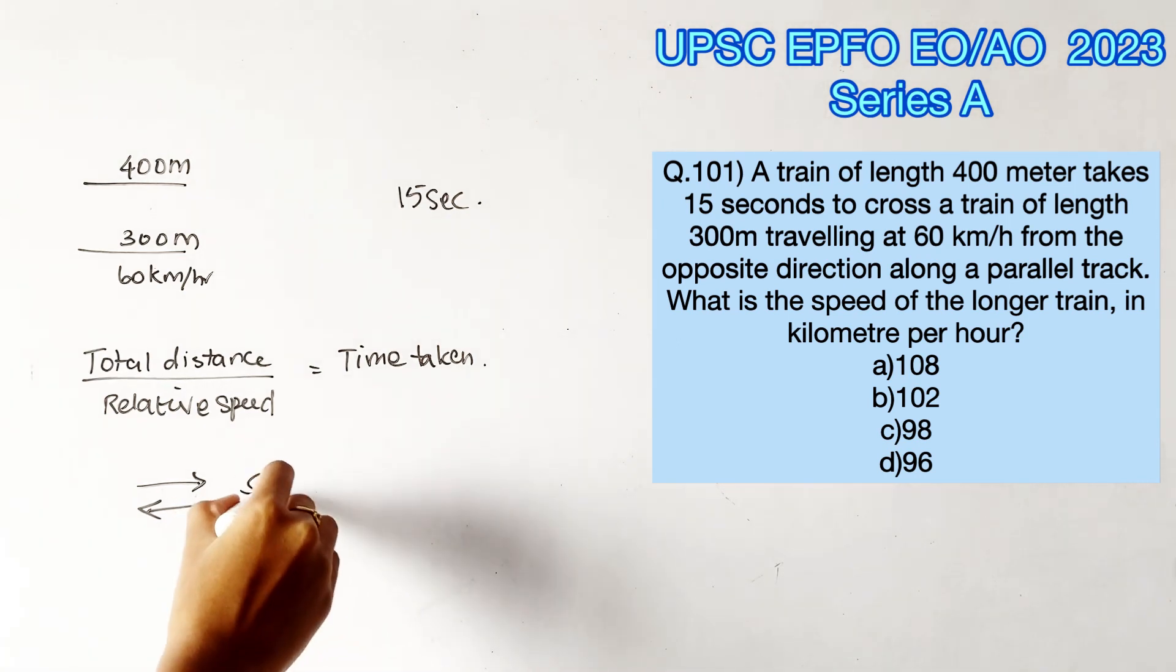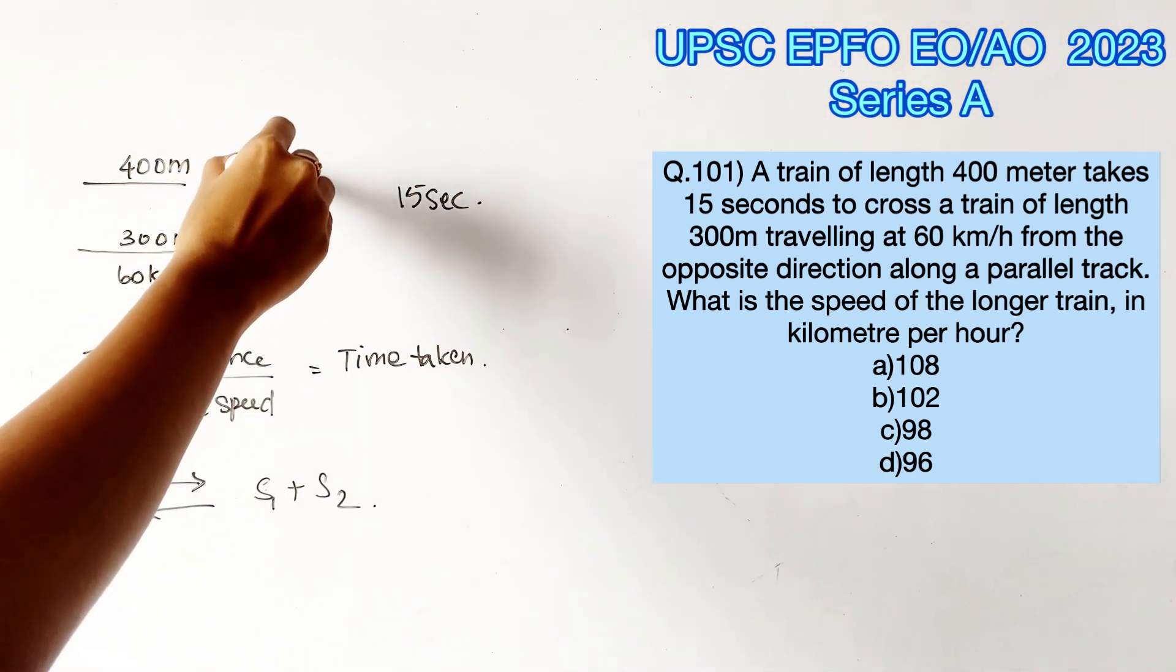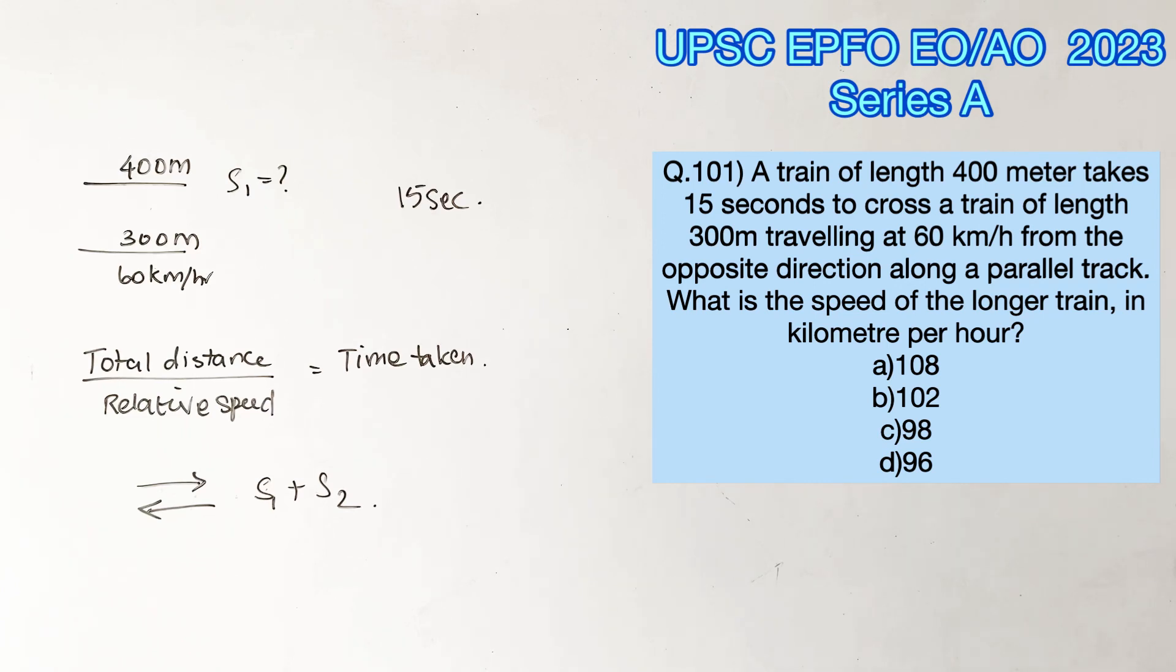We need to find the speed of the first train. We don't know what S1 is. S2 is 60, so the relative speed would be S1 plus 60. Substituting the relative speed here.